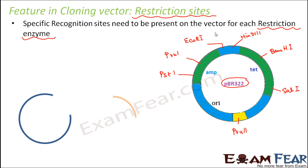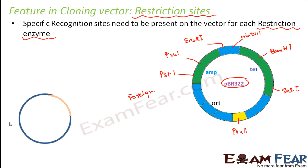Once you have the restriction sites, the restriction enzyme will be able to cut the vector, creating a specific region or space. The cut foreign piece of DNA — which contains our gene of interest — can then combine with this plasmid or vector DNA, and as a result recombinant DNA is formed. So the presence of restriction sites is the second important feature that should be present in a cloning vector.